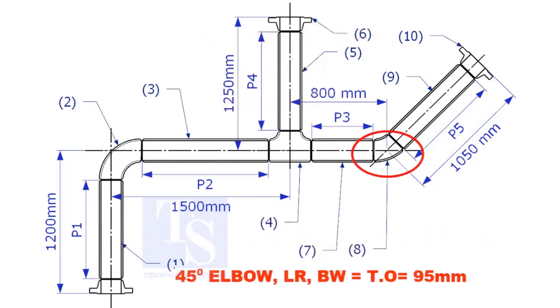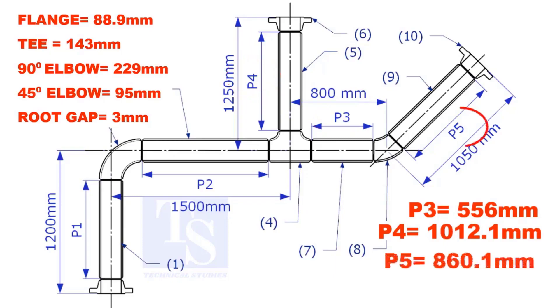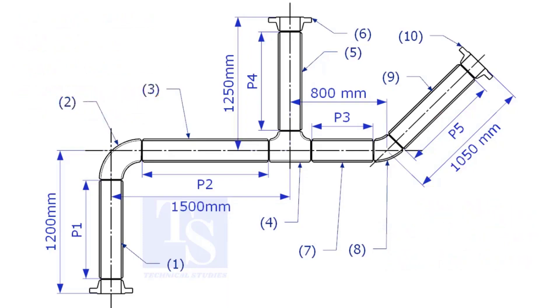Takeoff length of the 45 degree elbow is 95mm. The length of pipe P3, P4, and P5 are given. You can cross check if the answers are correct or not. Please check the description for this sketch. Thank you for watching.